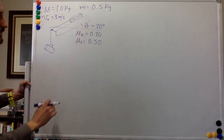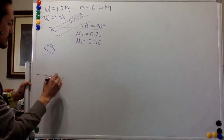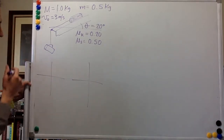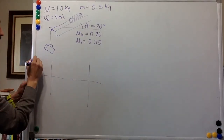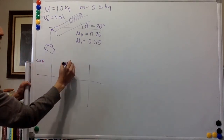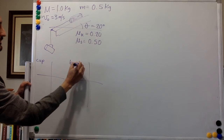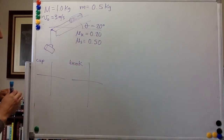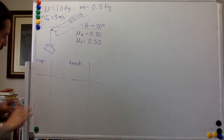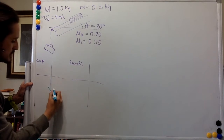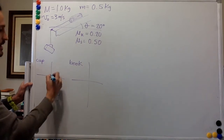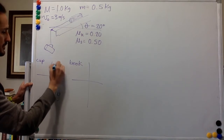Let's analyze first the free body diagrams of the book and the cup. For the cup, we have the weight of the cup, mg, and we have the tension. That's it.